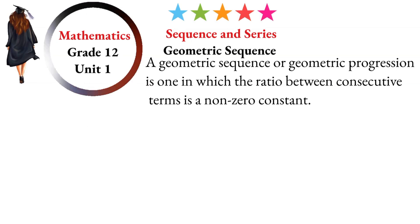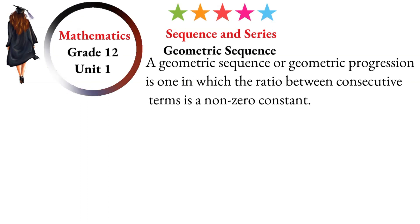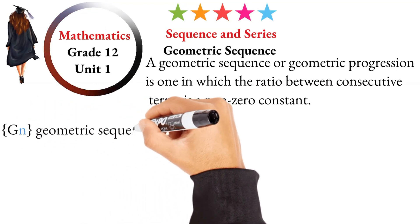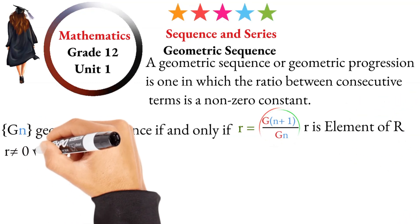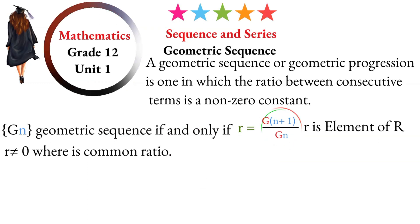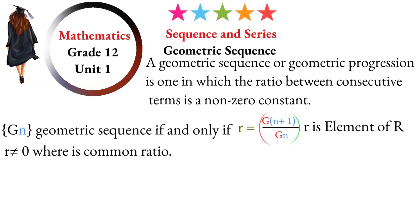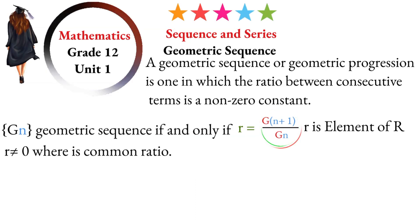A geometric sequence gn is a geometric sequence if and only if the common ratio r is equal to g(n+1) over gn. The common ratio r equals g(n+1) over gn, which is also equal to g3 over g2. For example, let me give an example.